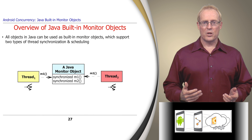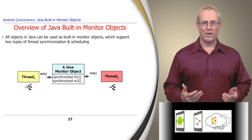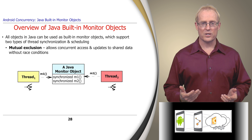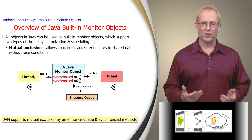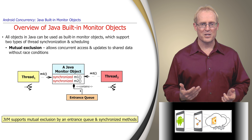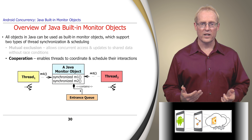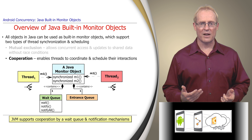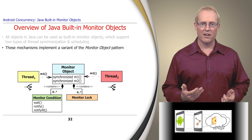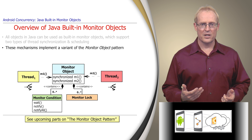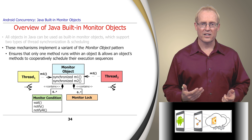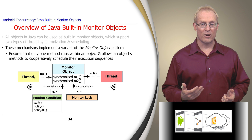All objects in Java can be used as built-in monitor objects, which support two types of thread synchronization and scheduling: mutual exclusion and cooperation. Mutual exclusion enables multiple threads to access and update shared data without race conditions, supported via an object's entrance queue and synchronized methods. Cooperation enables threads to coordinate and schedule their interactions, supported via an object's wait queue and notification mechanisms. These mechanisms implement a variant of the monitor object pattern, ensuring only one method runs within an object and allowing methods to cooperatively schedule their execution sequences.